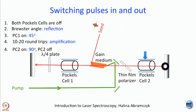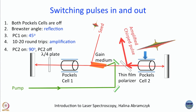Pockels cell 2 is switched on to introduce a 90-degree rotation of polarization. When the horizontally polarized light comes back from the mirror and turns by 90 degrees, it becomes vertically polarized. The thin-film polarizer reflects vertically polarized light, so the beam goes out as the amplified chirped pulse. This is what happens in the laser we use.